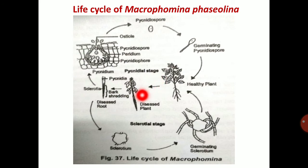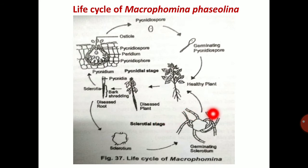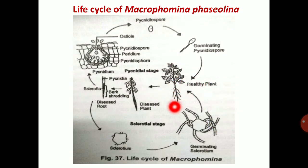In the sclerotial stage, sclerotia are released into the soil where they tolerate the unfavorable condition. They then initiate the disease. Sclerotia act as the primary inoculum for the next season. Sclerotia germinate and infect the healthy plant, continuing the life cycle.